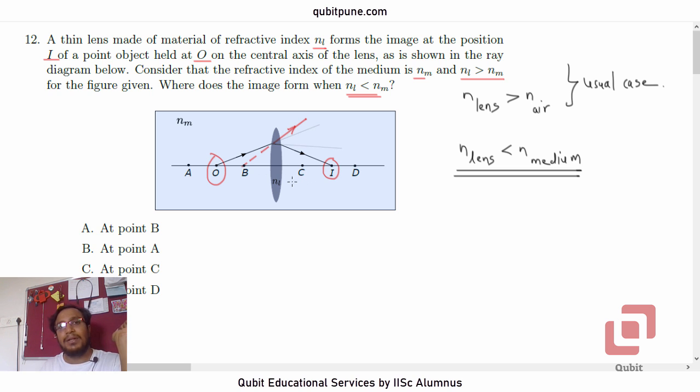So the image formed will be a virtual image and therefore the correct option to question number 12 is option A at point B.